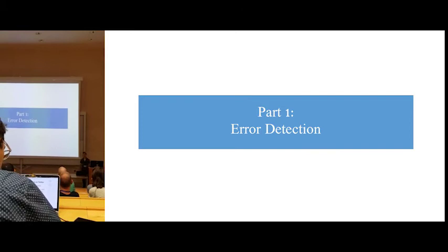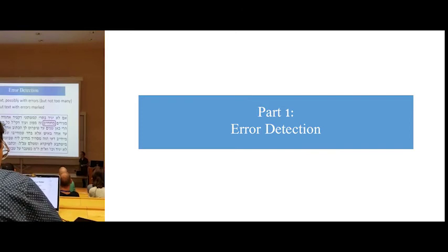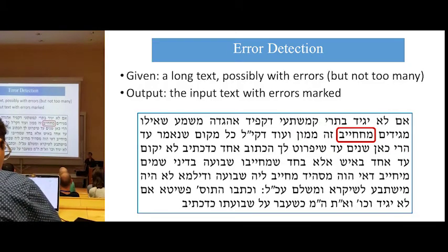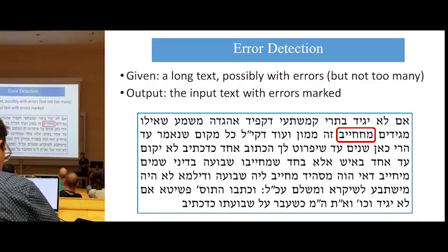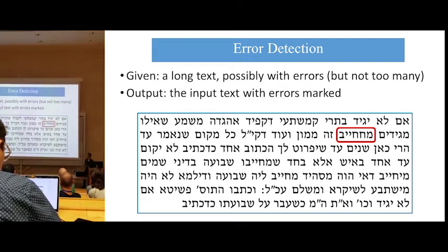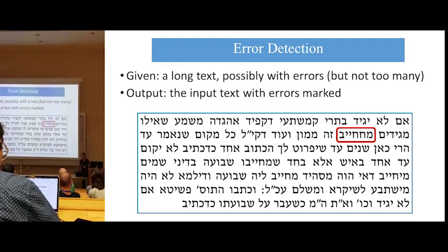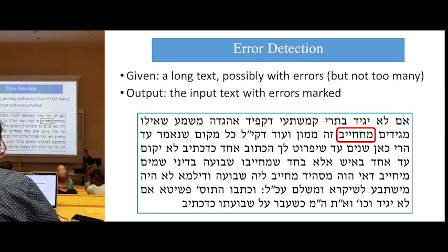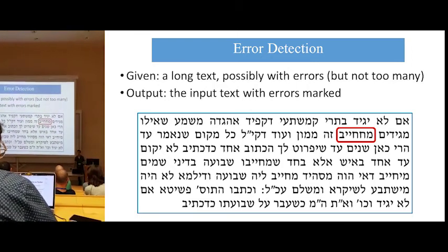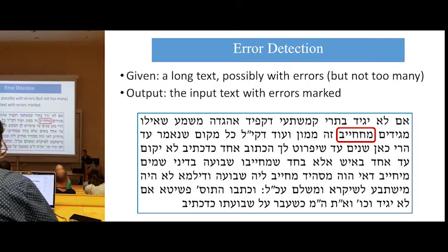Our first project is error detection. Our objective is to take a long text which contains errors and automatically flag all the suspected errors. These texts have been proofread by many humans, but they have not managed to eradicate all the errors. Therefore, every mistake that we find is a very valuable contribution.